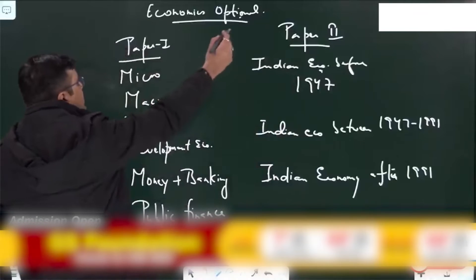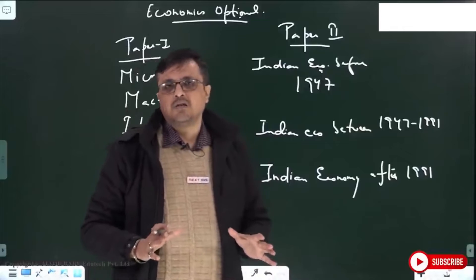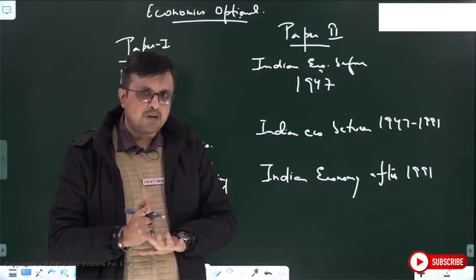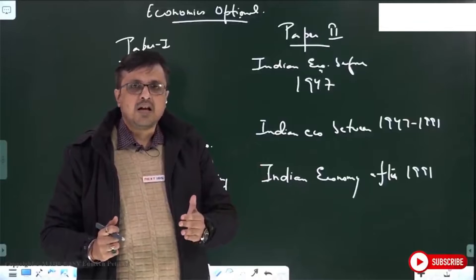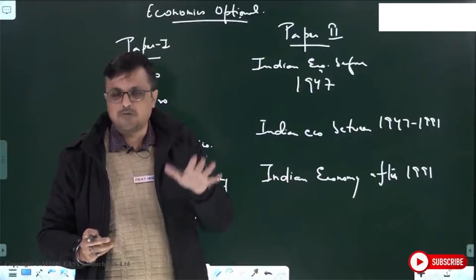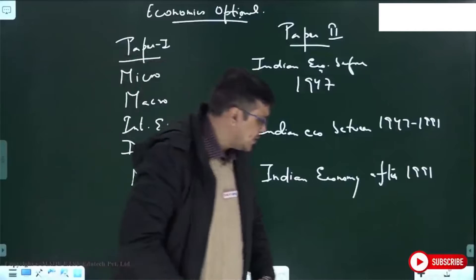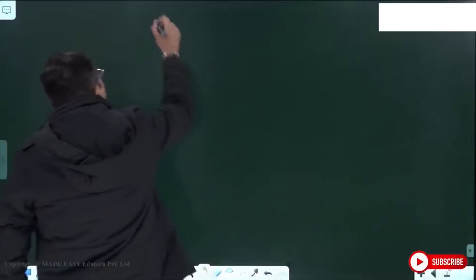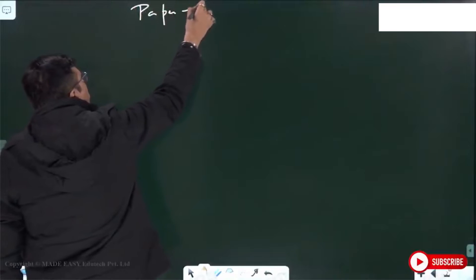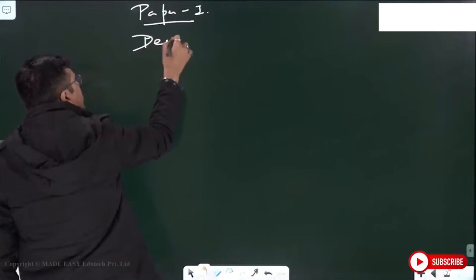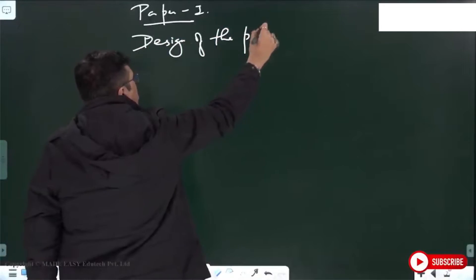Both papers have the same design: you will have a set of eight questions. The first question will have five parts and it will be compulsory. Then there will be second, third, and fourth questions, and then the fifth question will be compulsory. All five parts of the sixth, seventh, and eighth questions will be among options. So if we look at the design of the paper...